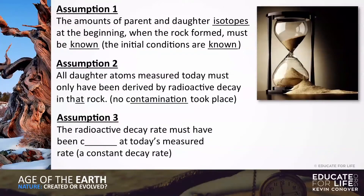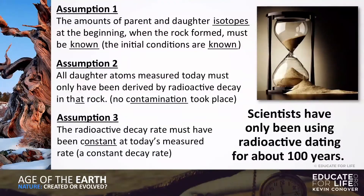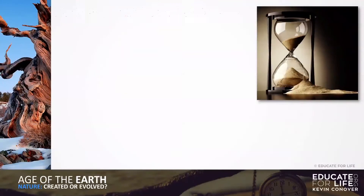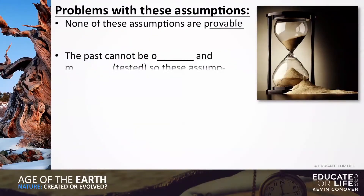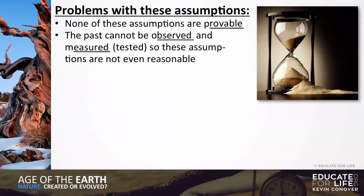Assumption three: the radioactive decay rate must have been constant at today's measured rate — a constant decay rate. The problem is we've only been dating rocks and fossils for about a hundred years using radioisotope dating. So how do we know the rate has been consistent over billions of years? We don't. These three assumptions literally cannot be known, none of them are provable, and the past cannot be observed and measured, so these assumptions are not even reasonable.